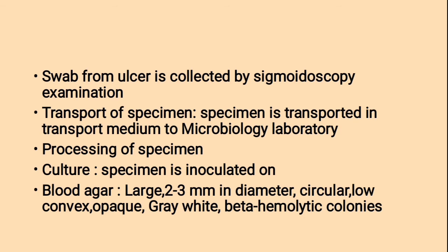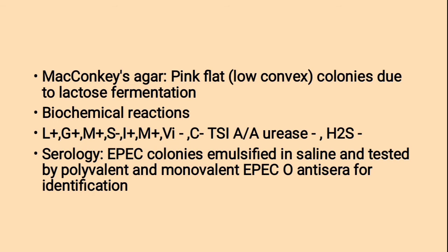Transport: specimen is transported in transport medium to the microbiology laboratory. Processing — Culture: specimen is inoculated on Blood agar and MacConkey's agar. On Blood agar they form large 2–3 mm diameter circular low-convex opaque grey-white colonies with beta-hemolytic property. On MacConkey's agar they form pink flat colonies due to lactose fermentation. Biochemical reactions: lactose, glucose and mannitol fermenting; sucrose negative; indole and methyl red positive; Voges-Proskauer and citrate negative; TSI acid-forming; urease and H2S negative. EPEC colonies are emulsified in saline and tested by polyvalent and monovalent EPEC antiserum for identification in serological tests.